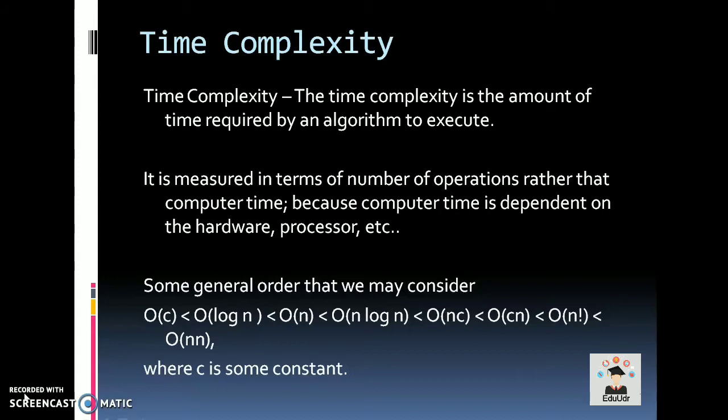First is time complexity. The time complexity is the amount of time required by an algorithm to execute. It is measured in terms of number of operations rather than seconds or milliseconds because computer time is dependent on hardware and processor. Some general order that we may consider: O(c) < O(log n) < O(n) < O(n log n) and so on, where c is some constant.